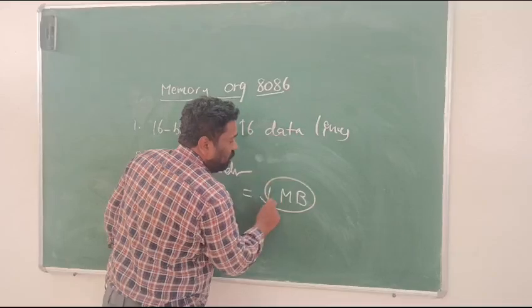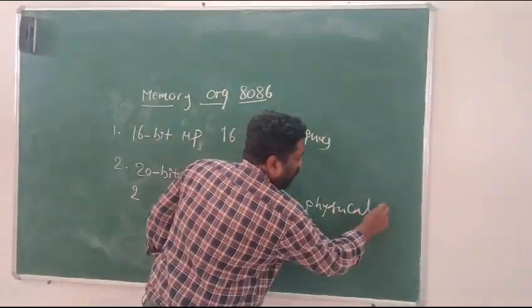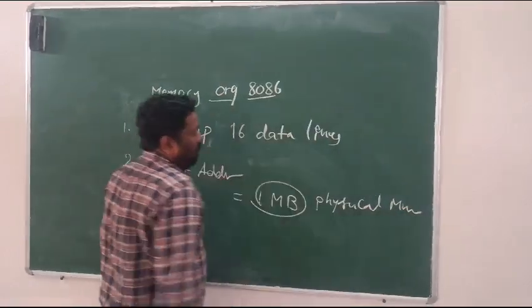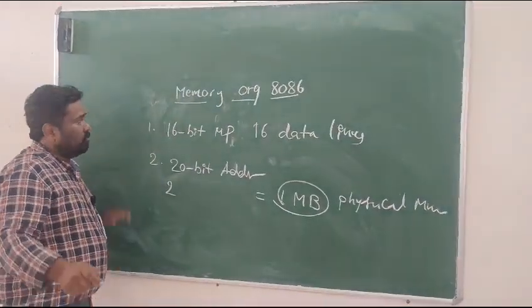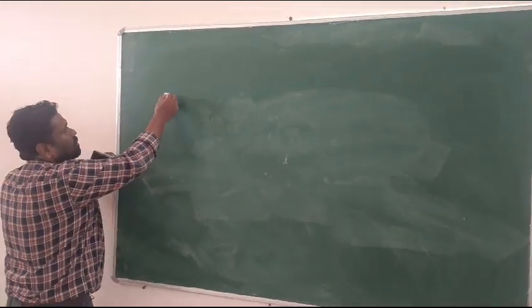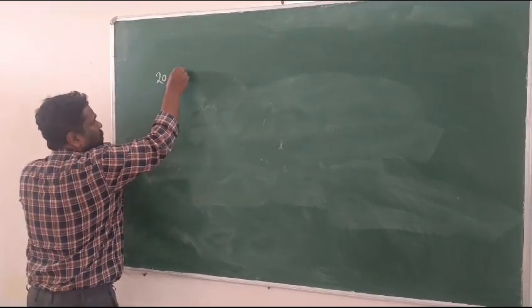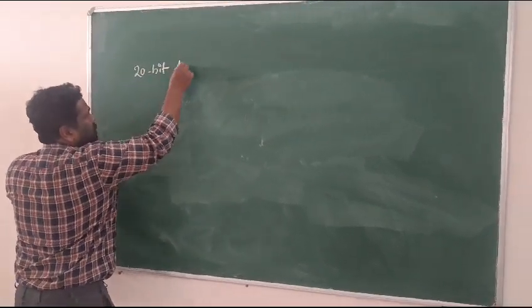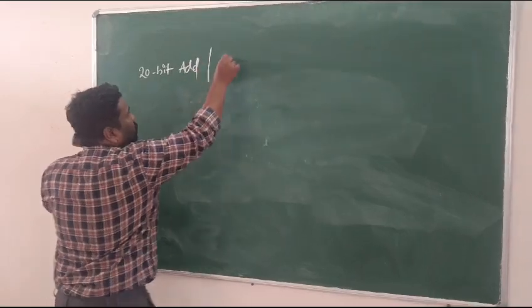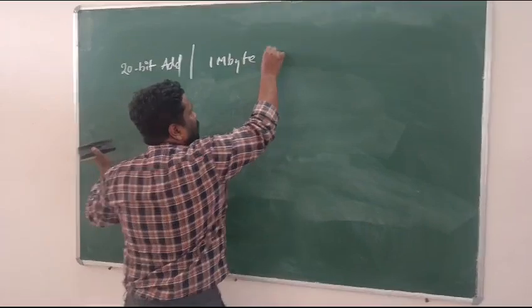So this 1MB is what we call the physical memory of 8086. So basically the most important specification is 20-bit address lines, and it is having 1 megabyte of physical memory.